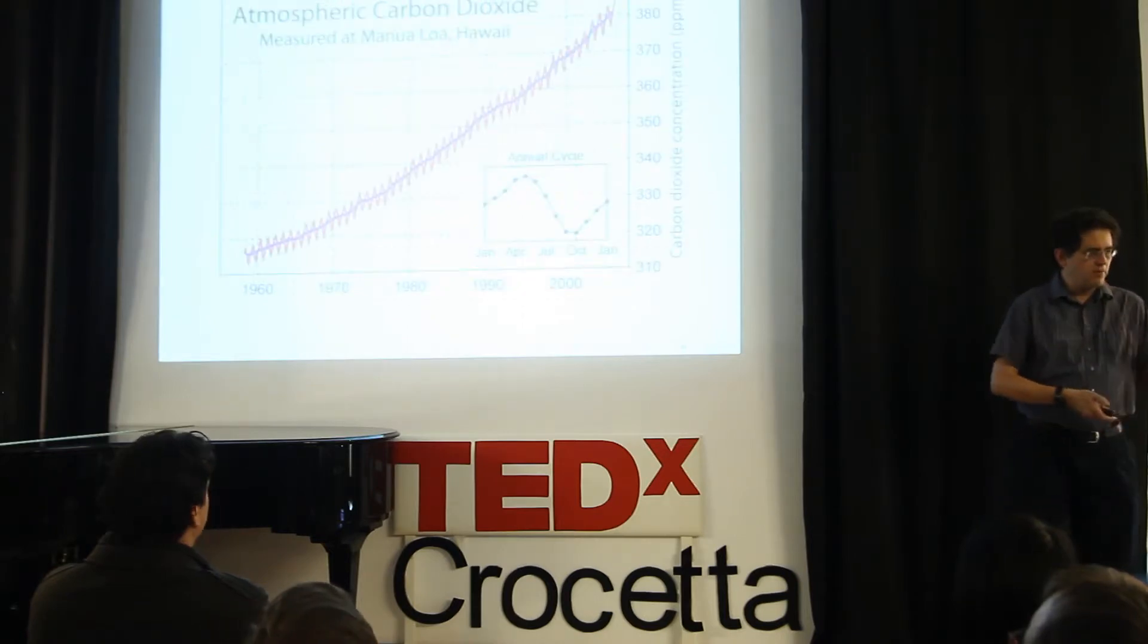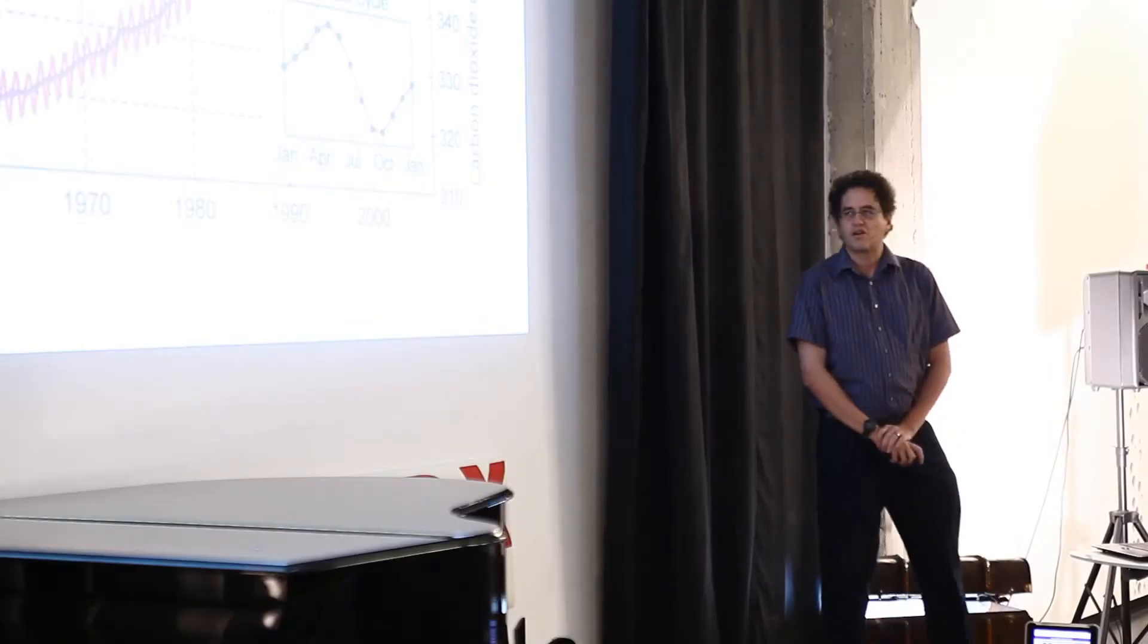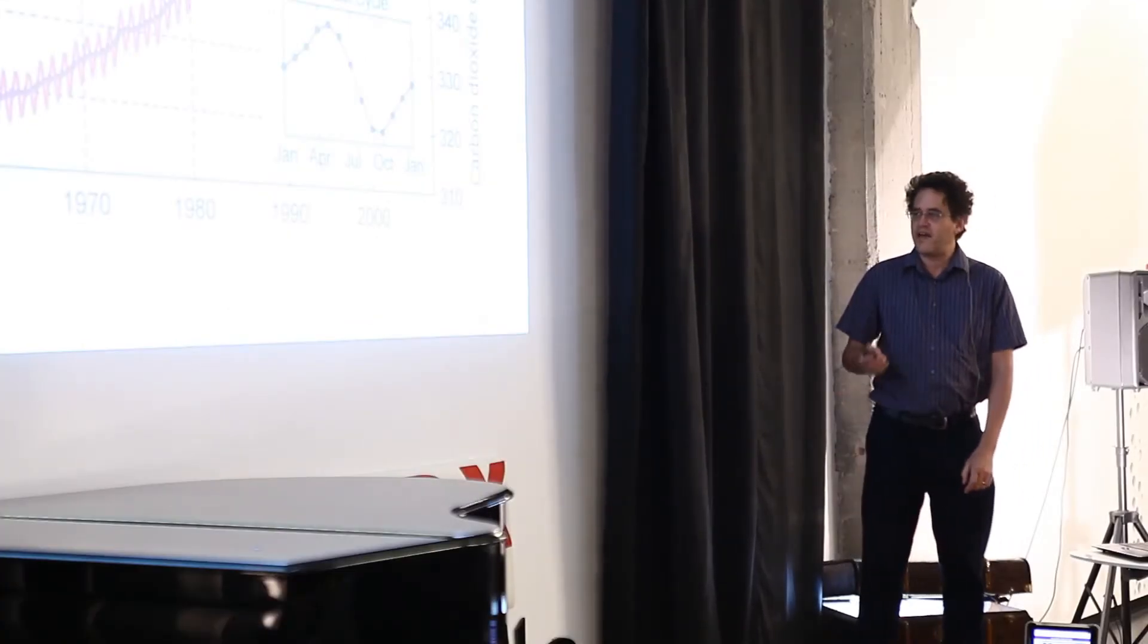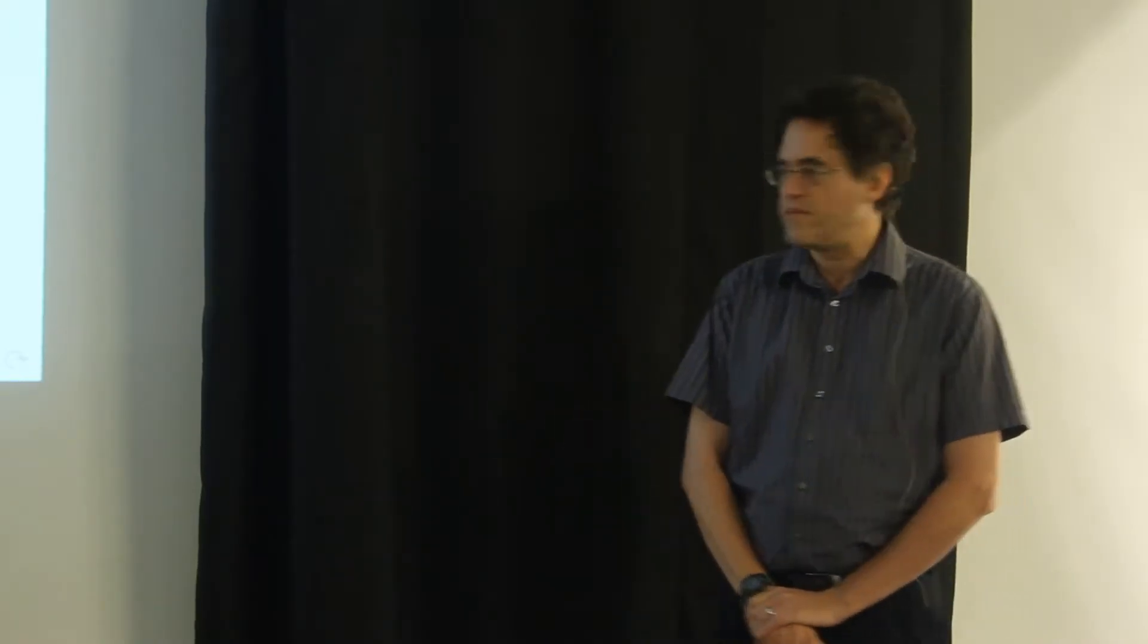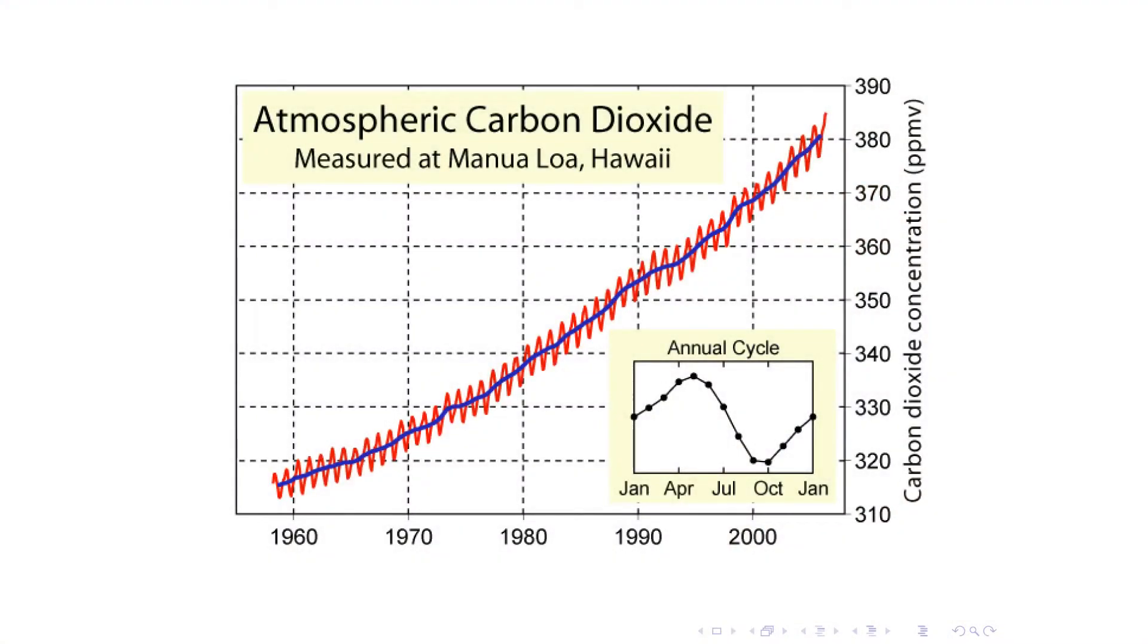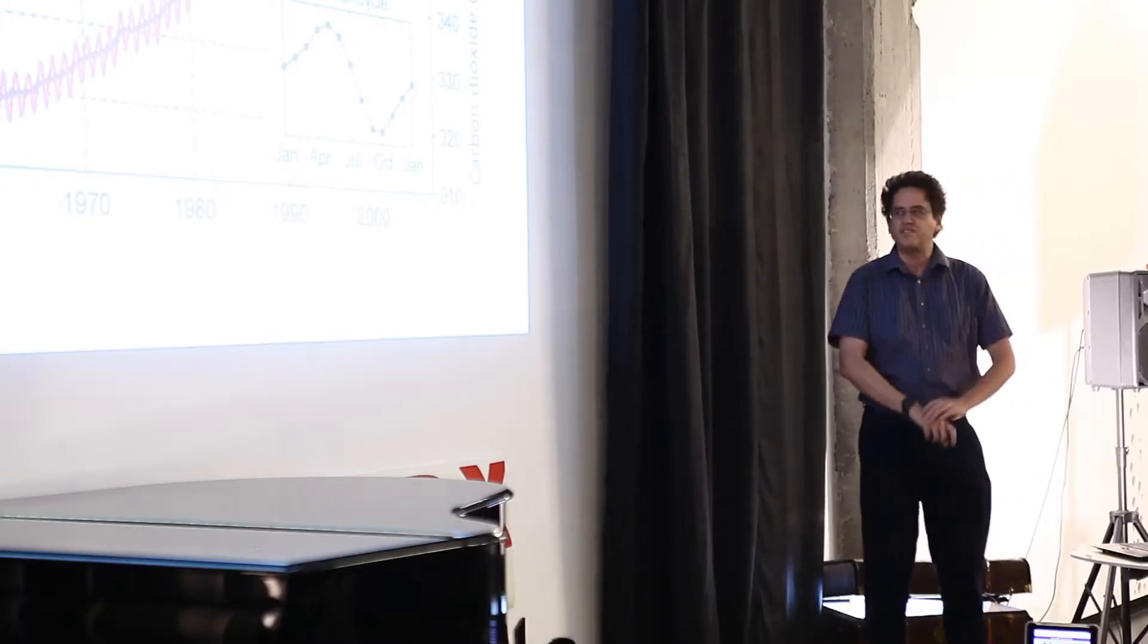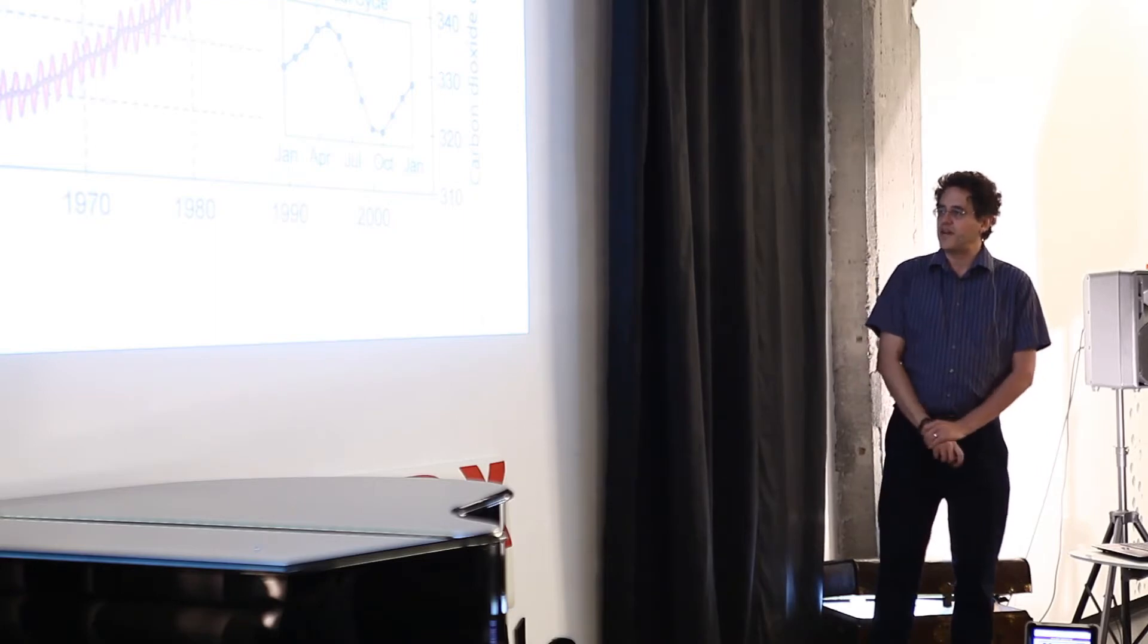But unfortunately, almost all that energy is created by the simple method of burning carbon. So of course, there's going to be more carbon dioxide in the air. This is a famous graph of a scientist who started measuring the amount of carbon dioxide in the air starting in 1960. And just since then, the amount has gone up by a third, from 300 parts per million to 400 parts per million.